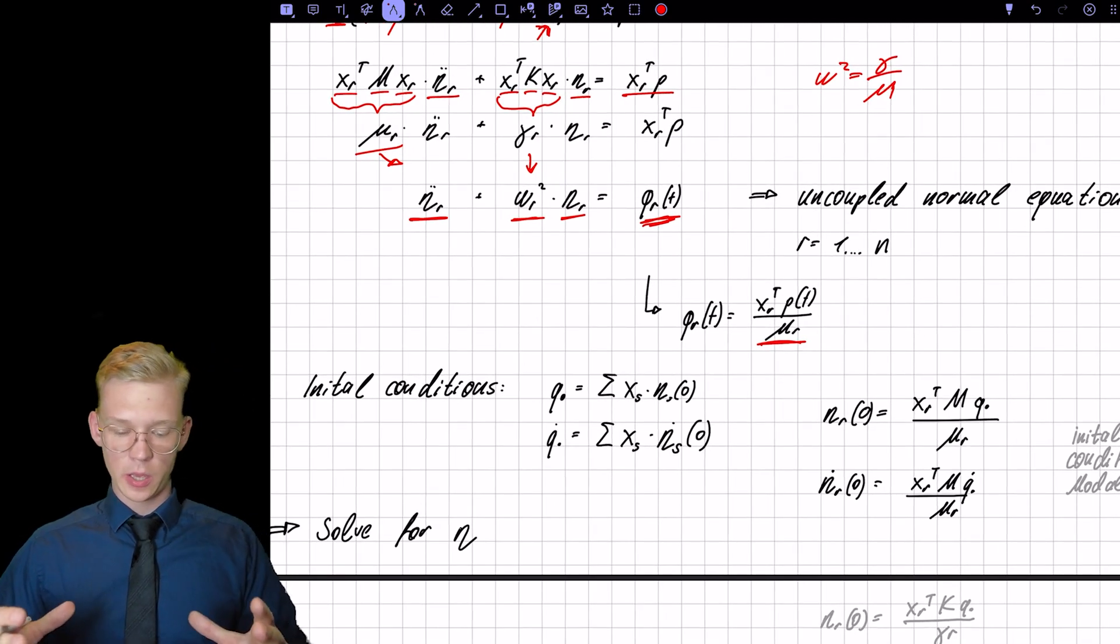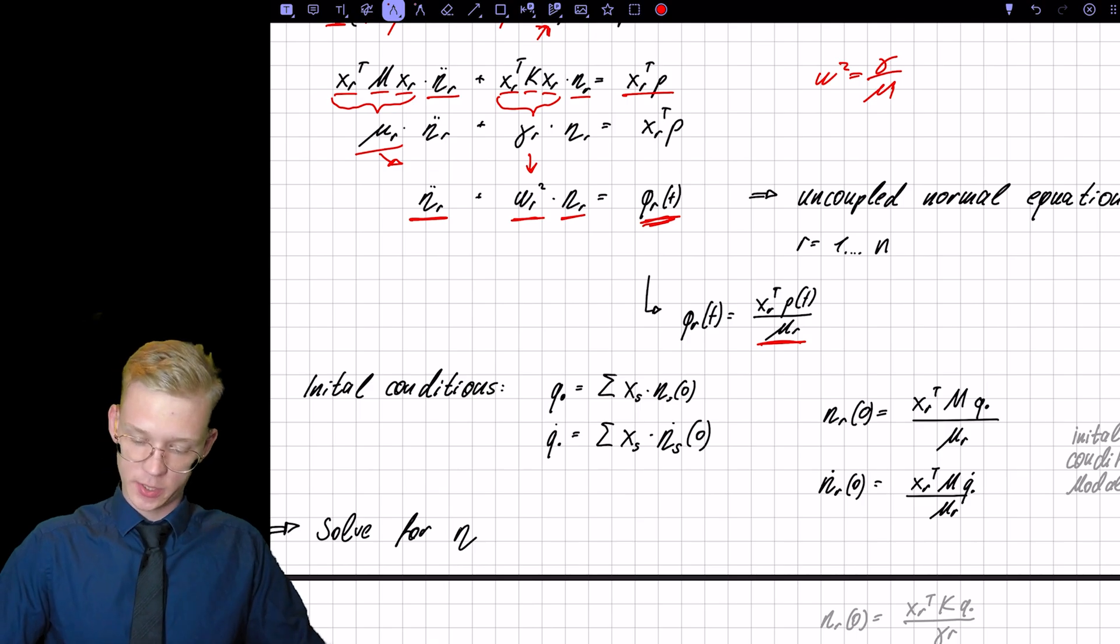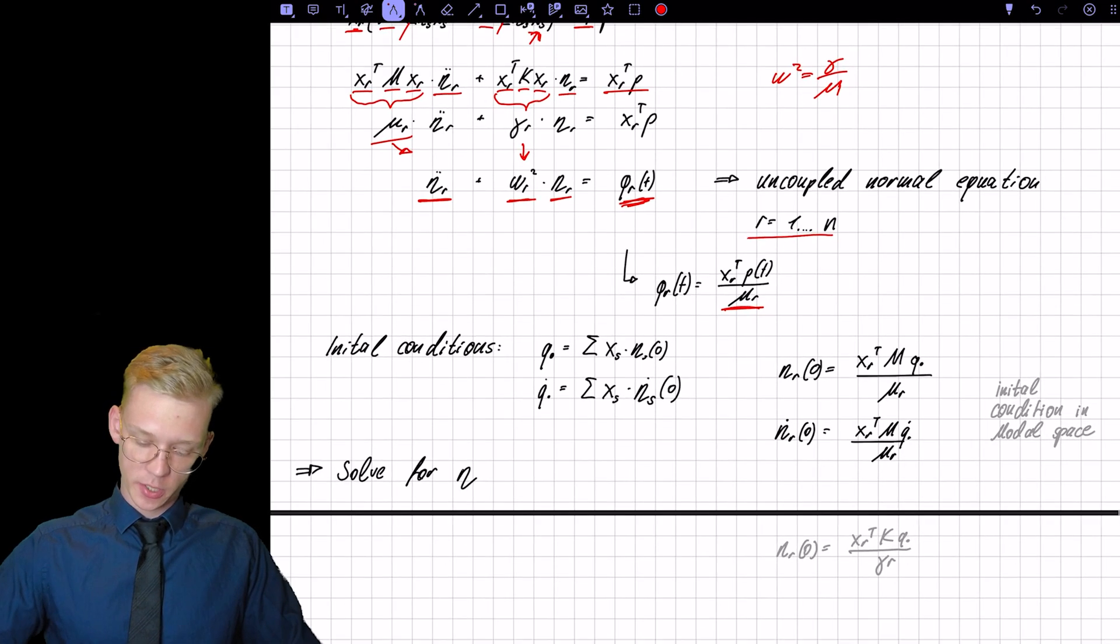So now we have a set of equations from R to N that we can solve individually. So they are not dependent on each other.